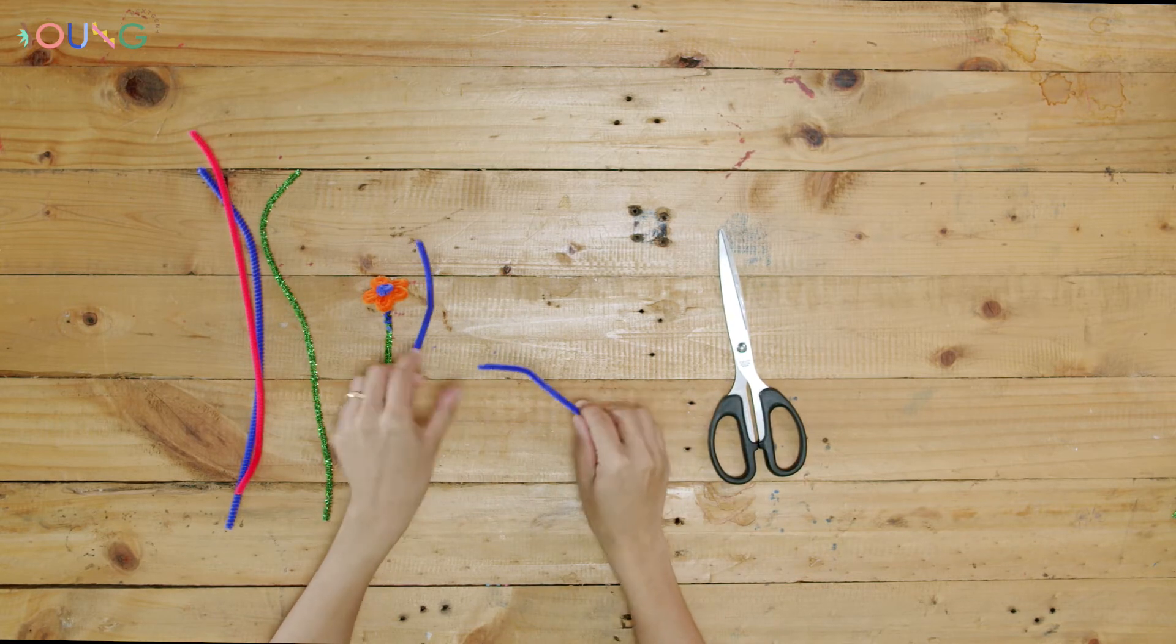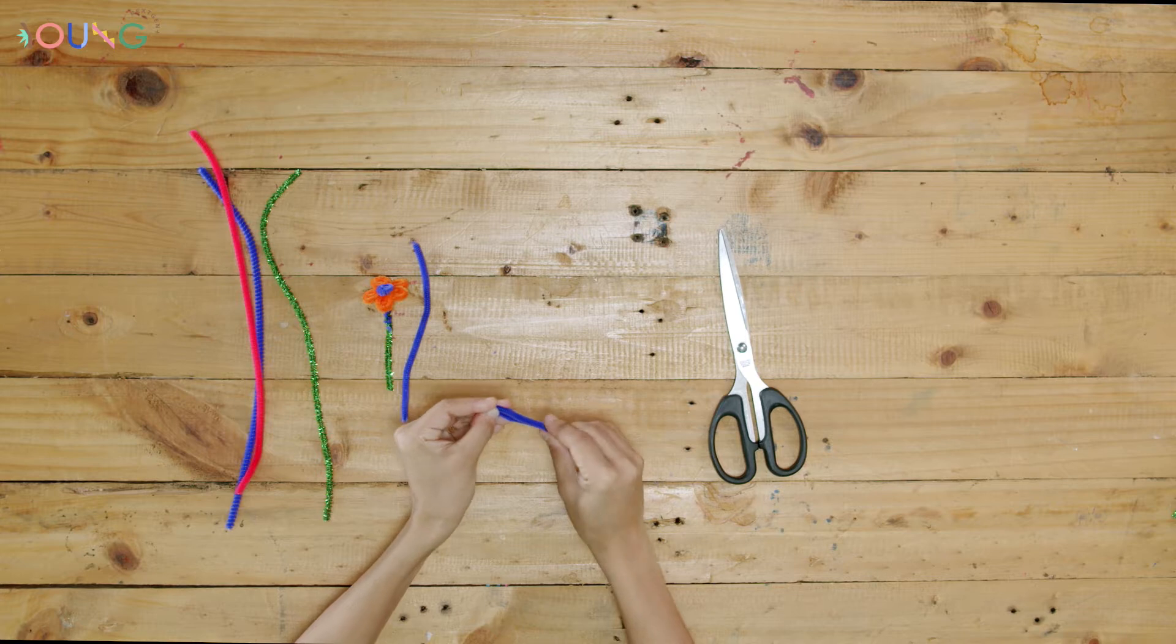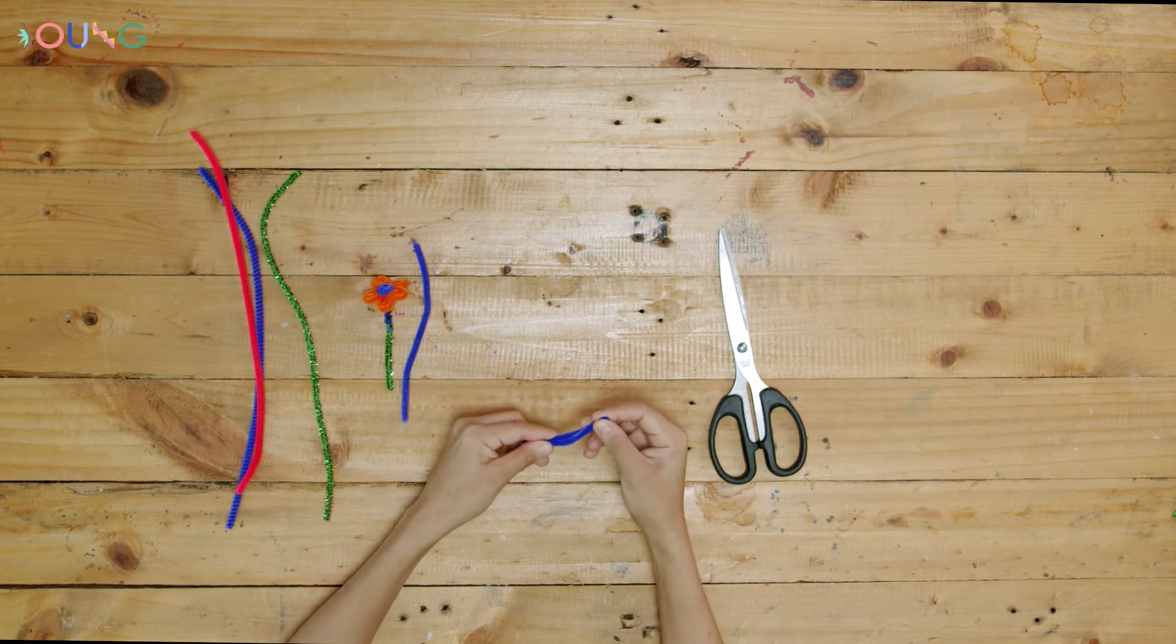Then, take the halves and cut both of them in half again so you have four short pieces from one pipe cleaner.